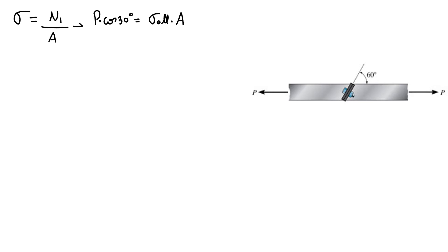So P using normal stress is equal to 20 KSI times area, 2 times π over 4 times 0.3 squared, over cosine of 30.